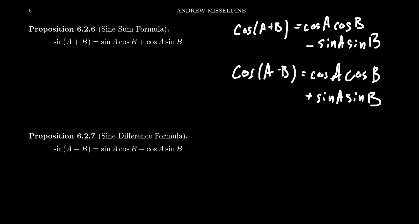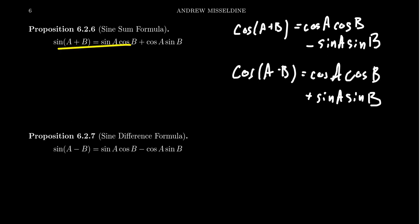Using this, we can actually prove the sum and difference angle formulas for sine. This is a consequence of the co-function theorem, which tells us that sine of any angle theta equals cosine of pi halves minus theta. We're going to prove the trigonometric identity: sine of a plus b equals sine of a cosine of b plus cosine of a sine of b.